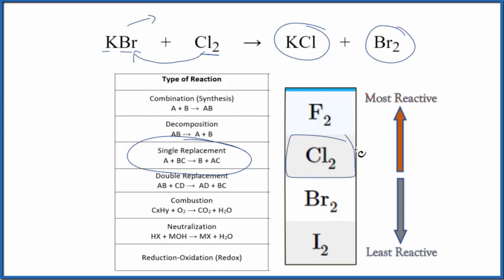Here's chlorine right here, and here's bromine. Towards the top, we have the more reactive elements. Chlorine is more reactive than bromine, so chlorine will push out the bromine. This single replacement reaction will happen.